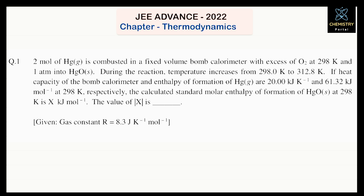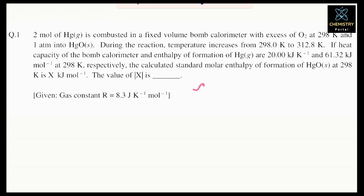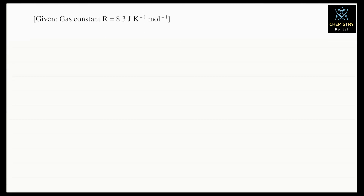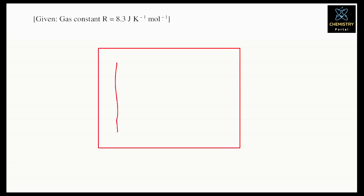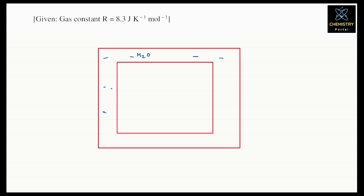A bomb calorimeter is a type of calorimeter where the volume is fixed. So first we will make a chart of what is given in the question. In the bomb calorimeter diagram, water is filled on the outside, and inside is the bomb where the combustion reaction takes place.